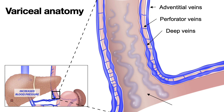The perforators are maximum closer to the GE junction; hence, you see large varices developing at the GE junction. As you go up from the distal to mid to proximal esophagus, the size of the veins becomes smaller. The density of perforator veins in the lower esophagus allows esophageal varices there to become very big, and once the veins become very big, they are at high risk for bleeding.